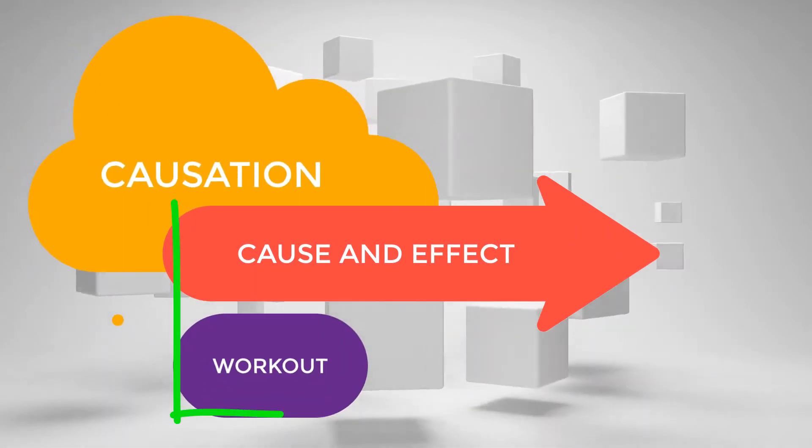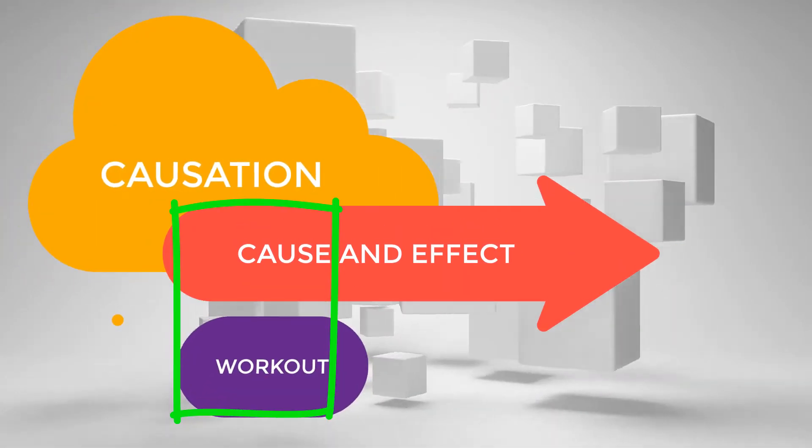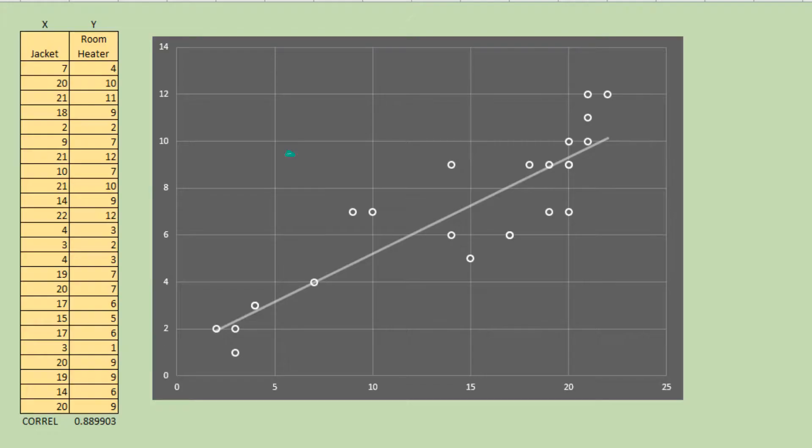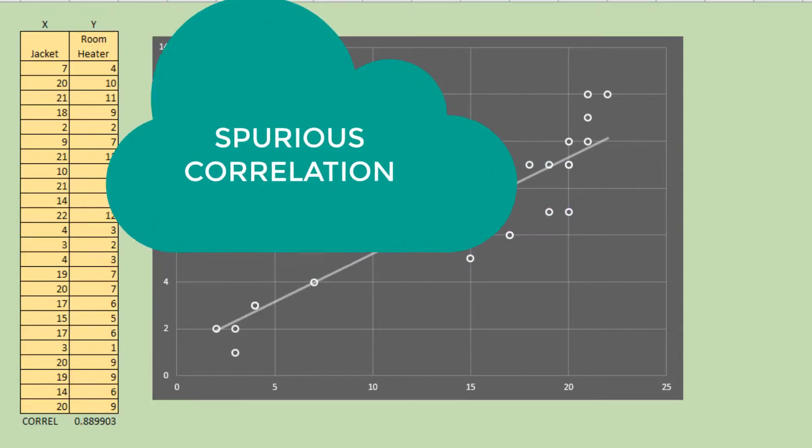Regular workout, the cause, is the reason why the person loses weight, the effect. Lastly, correlations can be spurious.